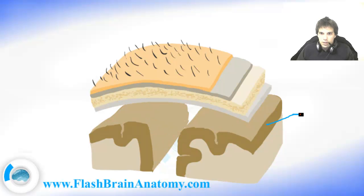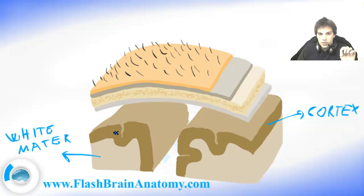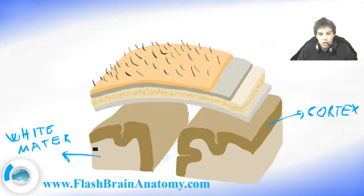Just to make it clear, this is the cortex, and this over here is the white matter. Just to tell you that here are the actual bodies of the neurons — that's why it has this darker color — and here in the white matter are axons, and that's why it has a brighter color.